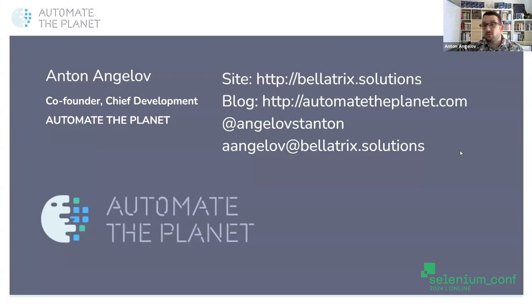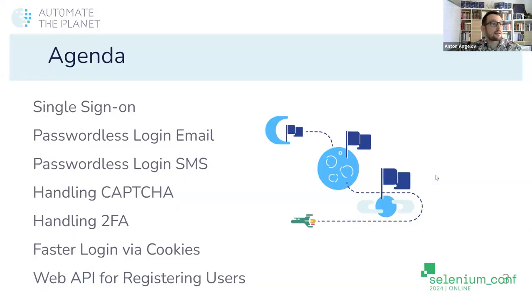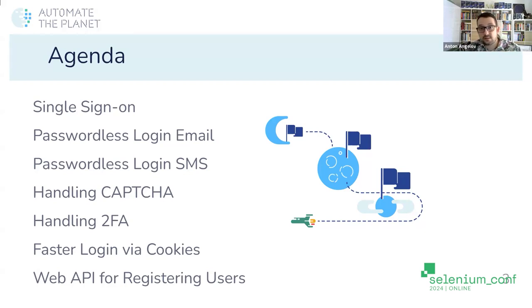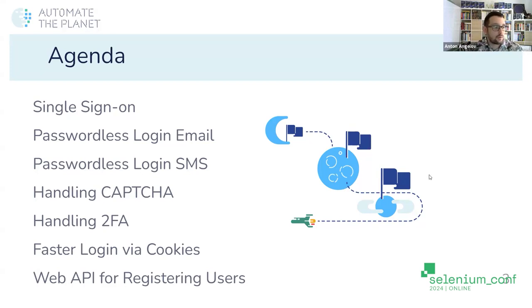Many of you know me from my book Automate the Planet, or for many of the books I wrote about automated testing. Here is our agenda. The first topic will be a little bit more theoretical because the demo is not so interesting. But after that, we're going to see many coding examples and live demos. We'll start with single sign-on, then proceed with passwordless login and one-time passwords via emails and SMS, integrating third-party services in our Selenium tests. After that, we'll cover how to bypass CAPTCHA and handle two-factor authentication. We'll end with making our tests faster and more stable by logging in with cookies and web APIs.